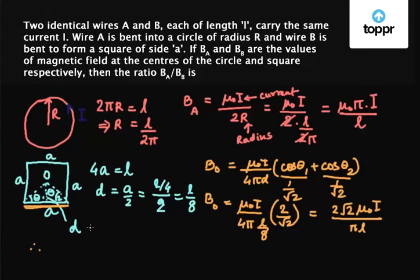Therefore the combination of these 4 wires is the magnetic field due to wire B at O, which is 4 times B₀. Let's say BB is the magnetic field due to the square at O. Then BB is 4 times B₀ equals 8√2 μ₀I upon πL.